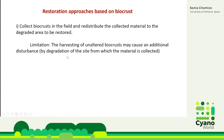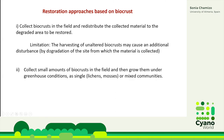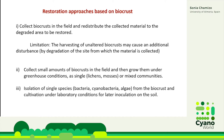We would be degrading a site to restore a different site, so we search for other approaches that don't cause this alteration. Another approach is to collect a small amount of biocrusts in the field and then grow them under greenhouse conditions. We can grow single communities of lichens, mosses, or mixed communities — the whole biocrust community. And another approach is the isolation of single species of the biocrust and cultivating them under laboratory conditions for their later inoculation in the soil.